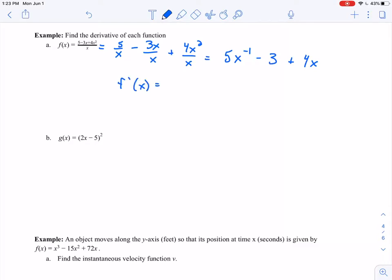f prime of x, I'm going to multiply by my power here, so negative 5x to the minus 2 power. Derivative of negative 3, that's just going to be 0, since that's a constant. And 4x, that's going to be plus 4 simply.